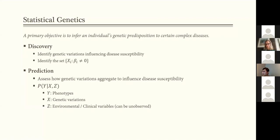So mathematically, we're seeking after the conditional distribution of Y given X and Z, where Z can be some environmental variables that are unobserved.